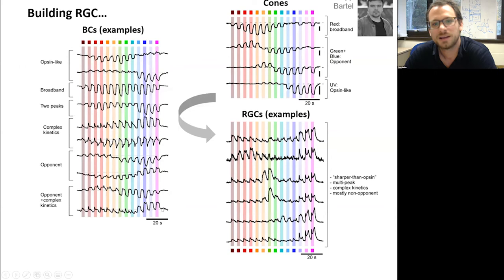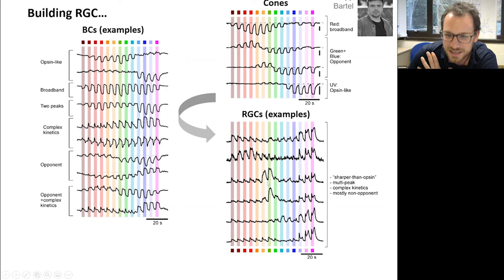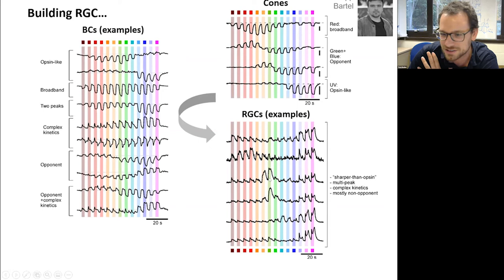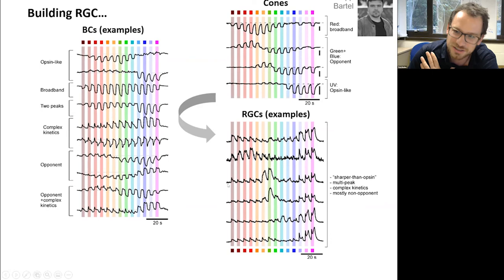Bipolar cells are not the output of the eye, and we've done the same analysis for ganglion cells, though the analysis isn't fully finished. Briefly, ganglion cells show bipolar-cell-like tuning but on steroids: tuning functions can be incredibly narrow — green is particularly sharp — with very dominant transient components and essentially everything rectified, as expected for a spiking code. There's a lot of complexity at the level of the ganglion cells.